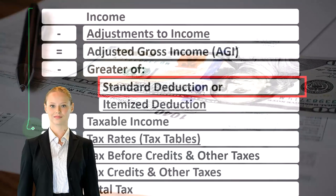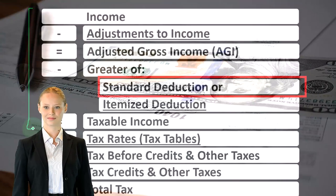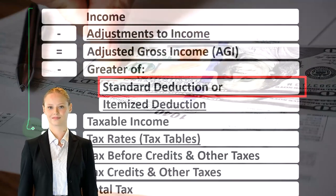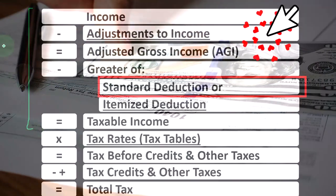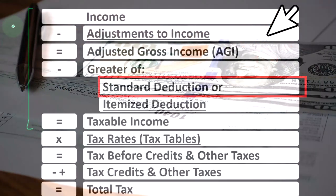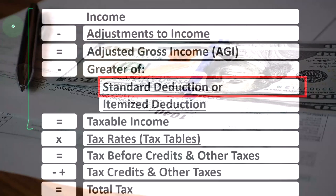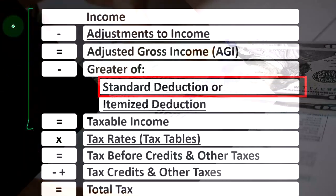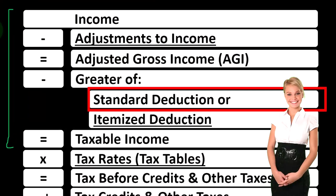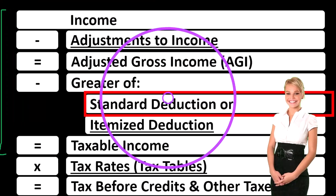Although it's a strange income statement — when we think about the income statement, income is basically bad. Everything is flipped on its head for taxes, and the expenses, called deductions in this case, are basically good.